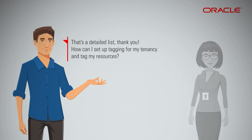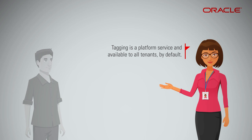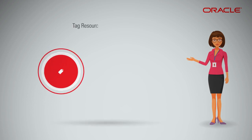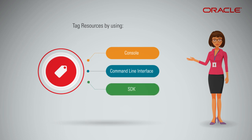How can I set up tagging for my tenancy and tag my resources? Tagging is a platform service and available to all tenants by default. You can tag resources by using the console, use the command line interface to apply tags, or use the SDK to automate the management of tags. Tags can also be applied when creating resources.